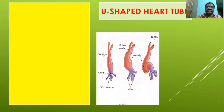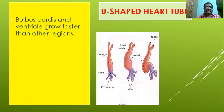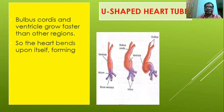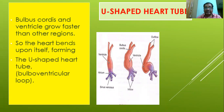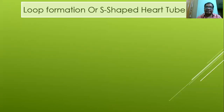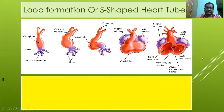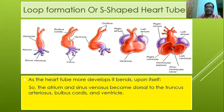Due to overgrowth of tissue, the bulbus cordis and the ventricle grow faster than other regions of the heart, so the heart bends upon itself forming a U-shaped heart tube. Later, due to further growth, the loop formation is complete and it forms an S-shaped heart tube. Ultimately, as the heart tube develops further, the atrium and the sinus venosus become dorsal to the truncus arteriosus, bulbus cordis, and the ventricle.